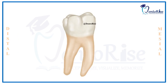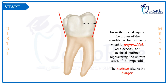The second heading would be the shape of the crown from this aspect. The shape of the permanent mandibular first molar from the buccal aspect is trapezoidal, with the cervical and the occlusal outlines representing the uneven sides of the trapezoid. Among these uneven sides, the occlusal side is longer than the cervical side.